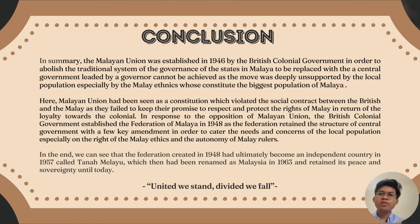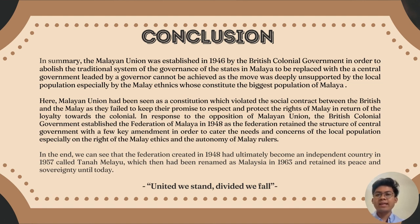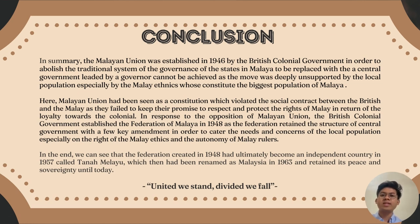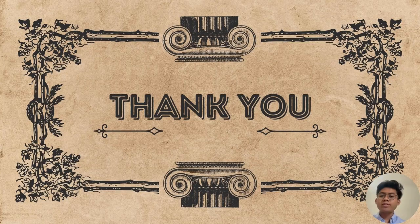In summary, the Malayan Union established in 1946 by the British colonial government was deeply opposed by the local population, especially the Malay ethnicity who constituted the biggest population of Malaya. The Malayan Union was seen as violating the social contract between the British and the Malays, as it failed to respect and protect Malay rights. In response, the British established the Federation of Malaya in 1948, retaining central government structure with key amendments addressing Malay ethnic rights and the autonomy of Malay rulers. The Federation ultimately became an independent country in 1957 called Tanah Melayu, later renamed Malaysia in 1963, retaining its peace and sovereignty until today. That concludes our presentation — thank you for listening, bye-bye and Assalamualaikum.